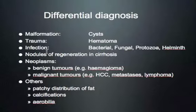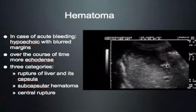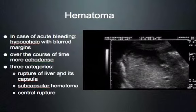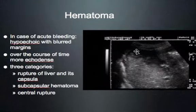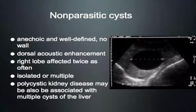First, because it is also a significant problem in the tropics, we look at sequelae of trauma — liver hematomas. In acute bleeding you find hypoechoic areas with a torn border; this hypoechoic material is blood. As the blood coagulates it becomes more echogenic. There are three categories: ruptures of the liver and capsule, subcapsular hematomas, and central ruptures in the more central areas.